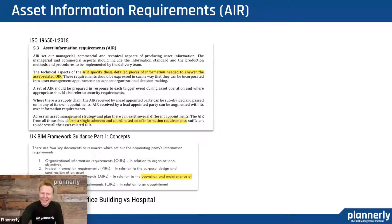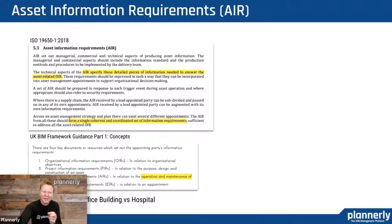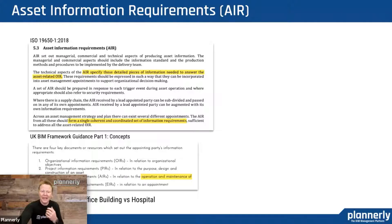The asset information requirements again depend on the type of asset or type of building. The asset could be anything — a specific object or element inside, maybe a pump, or it could be the asset at large for the whole building. When it comes to a medical office building versus a hospital, you're going to have many different assets. Being able to coordinate those information requirements and understand what those are for maintenance and ongoing lifecycle costing for that project — they're going to be very, very different.